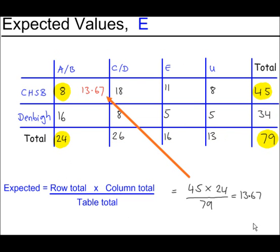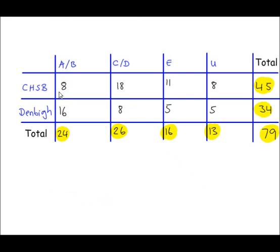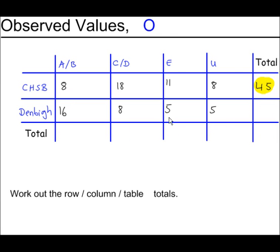Next you have to work out expected values, E values. I forgot to mention that these values here, these are the observed values. These are called O values, observed values, and you'll see that letter O appear in a formula that we're going to use in a short while.